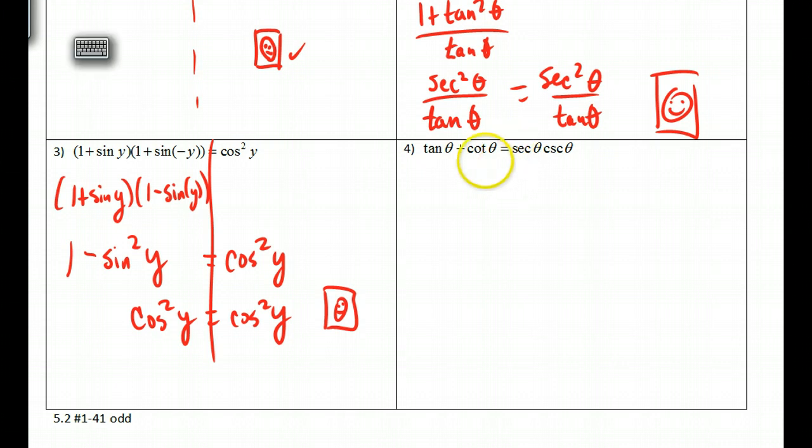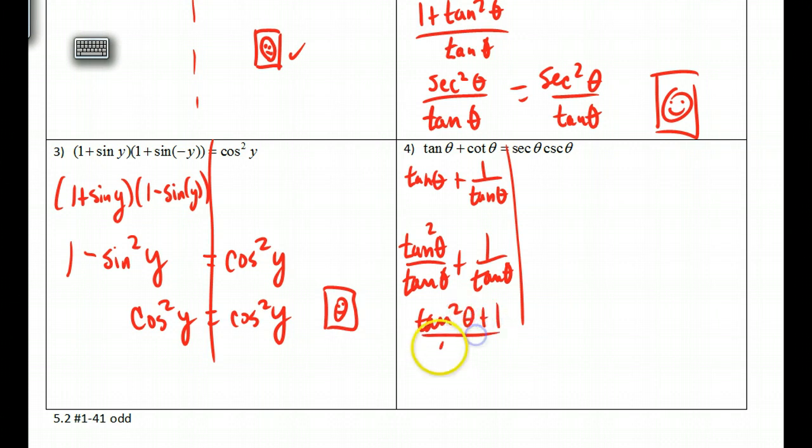You might want to jump ahead and try this one. This one has two terms. If I put them together, I might get it to look like this. Number four, tangent of theta plus cotangent, that's 1 over the tangent. I could change this all to sine and cosine and get a common denominator that way, but we'll just do it this way right now. Common denominator, this is tangent squared over tangent plus 1 over the tangent. Add that up. Tangent squared theta plus 1. This one looks very similar to the one above it. So the secant squared theta over the tangent of theta. Is that what we got? It's not.